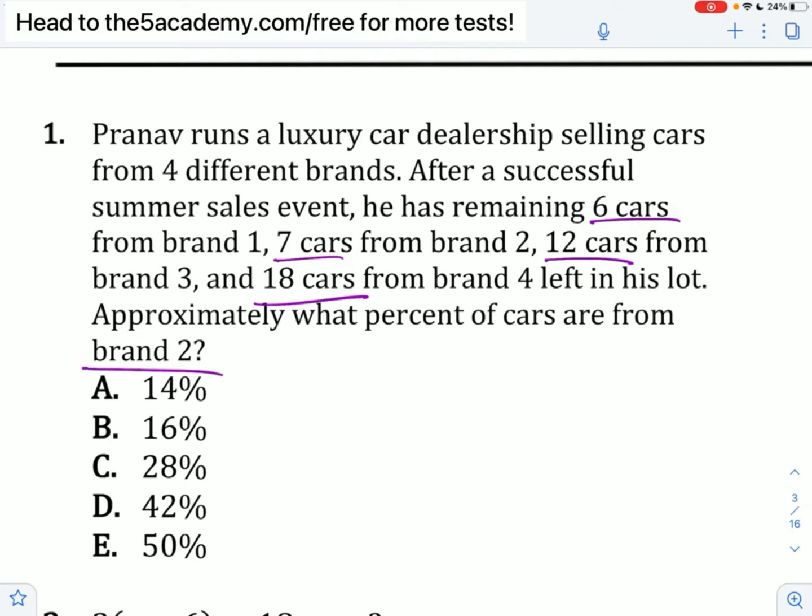So from brand two, if we want to calculate what percent of cars are from brand two, we can treat it like a probability problem. What's the probability of randomly selecting a car in the lot and having that car be from brand two? The numerator is the number of desired outcomes, seven cars. The denominator is the total outcomes, the sum of 6, 7, 12, and 18, which is 43. That comes out to 7 over 43, and if you calculate that, you get 0.16.